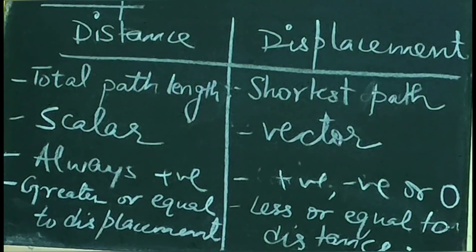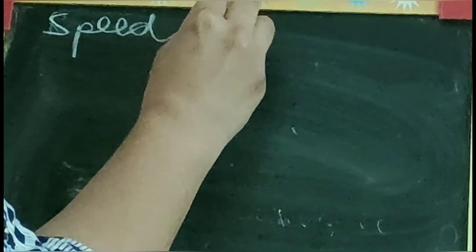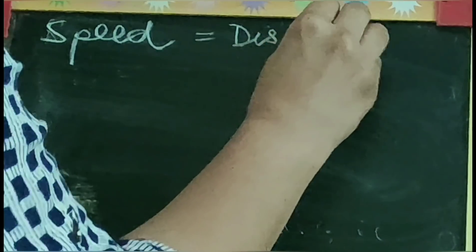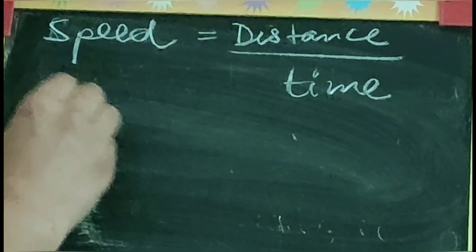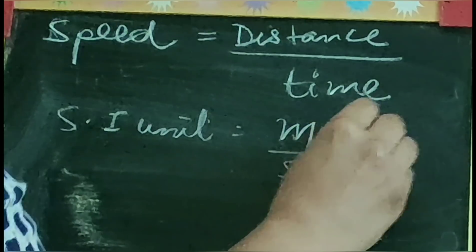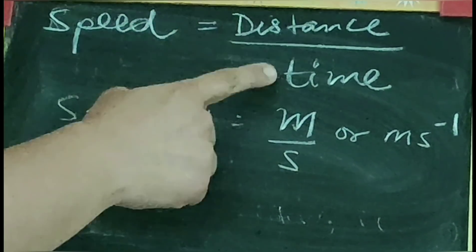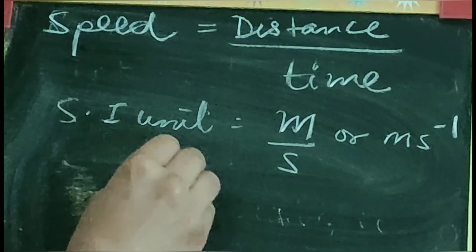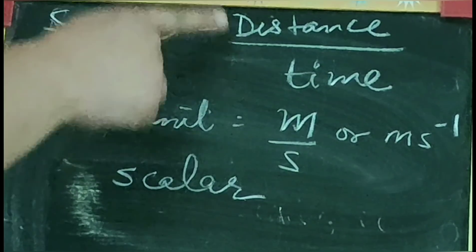Now, once we have defined distance and displacement, we are going to learn about speed and velocity. Speed, as we have already defined in class 7, is a physical quantity calculated as distance covered by an object per unit time. Numerically it is written as distance upon time. The SI unit for speed is meters per second. Since speed is calculated using distance and time, it is also a scalar quantity.